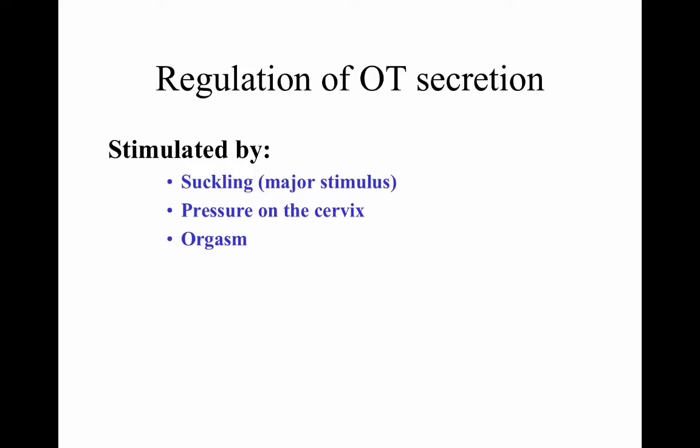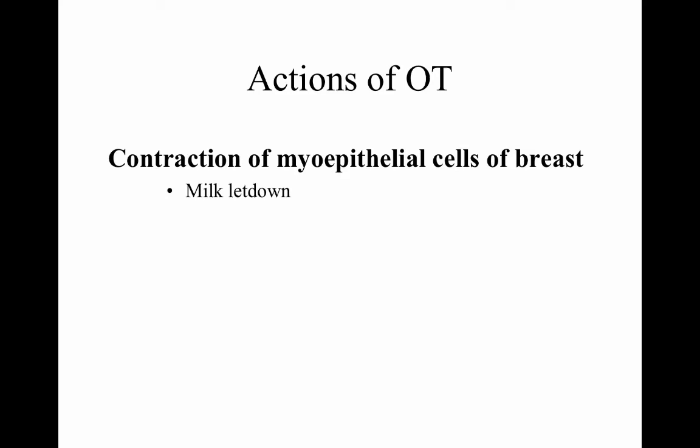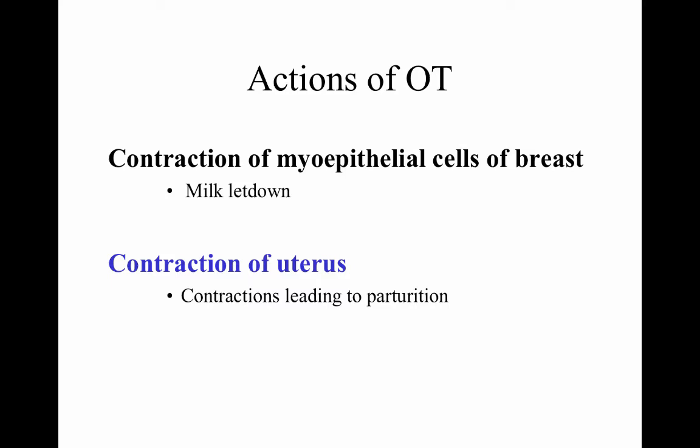Regulation of oxytocin secretion is stimulated by suckling, pressure on the cervix, and orgasm. Actions of oxytocin include contraction of myoepithelial cells of the breast allowing milk letdown, and contraction of the uterus leading to parturition or birth.